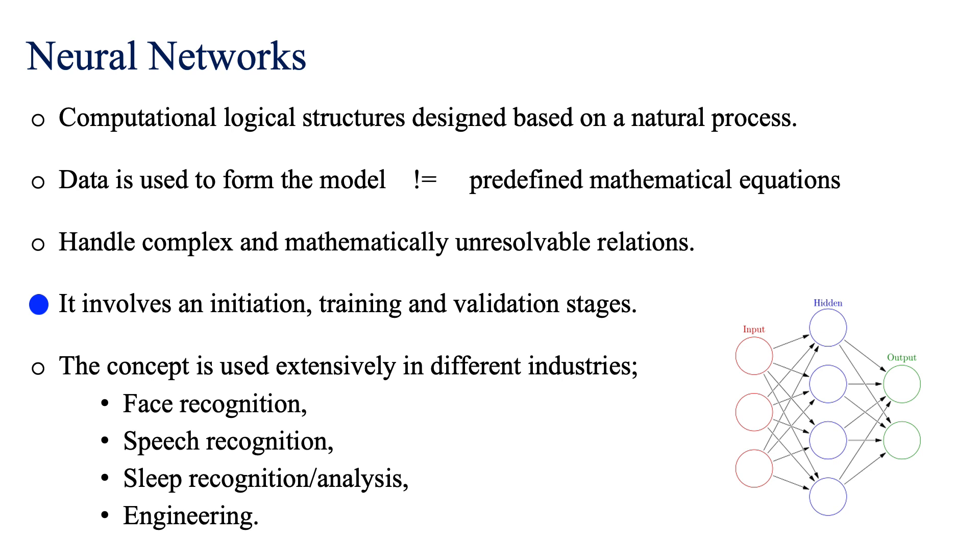So we show or we give the network some values that it has not been seen before. And we try to see what is the outcome of the network. And if the outcome of the network are close to the actual outcome or experimental outcome, that network is validated.